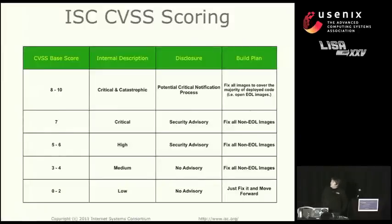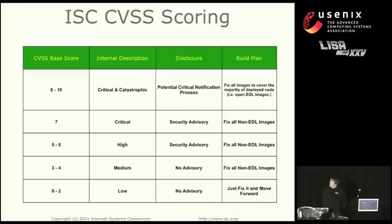We have set processes based on the CVSS number. If the base score is really low, we just fix it and move forward without an advisory. Up to four, we fix it but don't do an advisory. Starting at five, we do an advisory. The truth is that the nature of DNS is such that we very rarely have an issue below five — if we get an issue, it's usually a high-level issue, because a lot of ones that would be rated lower don't affect networks and DNS. It just always does.